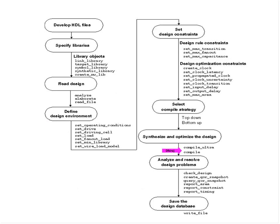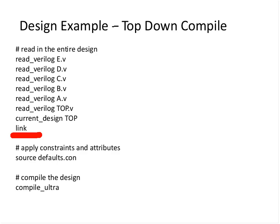Assuming you read all the files correctly, you source the constraint file - this defaults.con is the file we were talking about. As soon as you invoke DC, the search path and link path are already set. We read in the design, set the current design to top, link the design to make sure it elaborates perfectly, source the constraint file, and now we do a compile - we can do compile or compile_ultra. The libraries are part of the setup with link library and target library set correctly. We read in the design, define the design environment, set the design constraints, and now we apply the compile. We selected the compile strategy to be top-down.